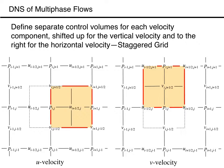To do so, we define a control volume for the u velocity by shifting the pressure control volume to the right, centering it at i plus 1 half comma j, and we define a different control volume for the v velocity by shifting the pressure control volume up, centering it at i comma j plus 1 half. This puts the pressure on the boundaries of the velocity control volumes, and as we will see shortly, this is exactly where we need them. Unfortunately, not all variables are stored where we need them, so in some cases we need to interpolate using linear interpolation, which also means we can generally assume the value at the center of each control volume equals the average value over the control volume.